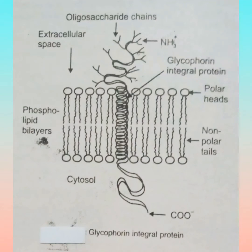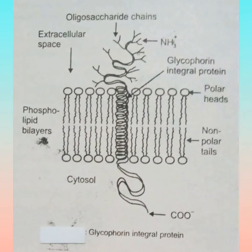In this video we will discuss the introduction and structure components of glycophorin integral protein. Glycophorins are glycoproteins containing 60% carbohydrate by weight. The oligosaccharides bonded to glycophorin are linked to serine, threonine, and asparagine residues.